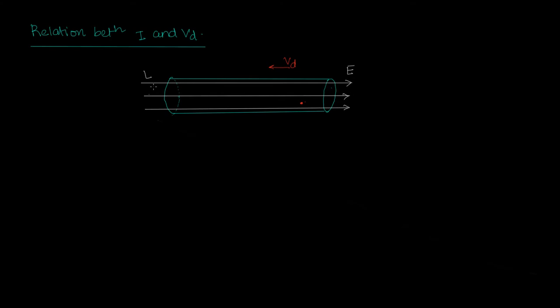You can assume that they are moving without collision at a constant speed of vd. Now let us try to understand what happens within a time delta t. I place myself here as an observer who is stationed at this point and I am looking at the whole process from here.